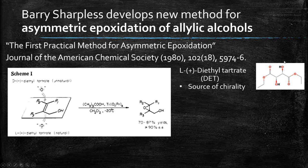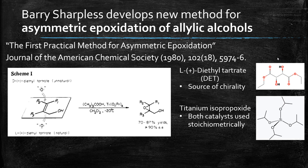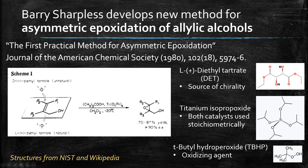The plus enantiomer is the naturally occurring one, and this forms a complex with titanium isopropoxide. In the method introduced in 1980, both of these catalysts were used stoichiometrically — a full equivalent of each was required for each equivalent of the allylic alcohol. The oxidizing agent is tert-butyl hydroperoxide, or TBHP for short. When we use a peroxide in the presence of a chiral environment and with a chiral catalyst, we can do so enantioselectively.